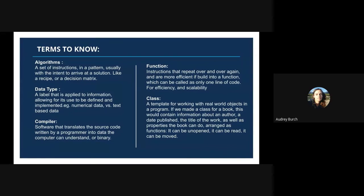In essence, a compiler is software that translates the source code written by a programmer into data the computer can understand — binary. The term function refers to instructions to repeat over and over again, and they are more efficient if built into a function than called individually. When you build a function, you can call it once and pass it the parameters or the data that it needs to run, instead of repeating multiple lines of code.